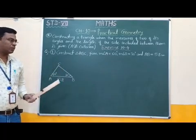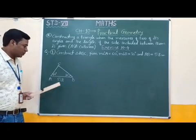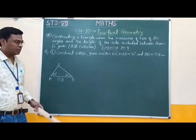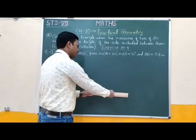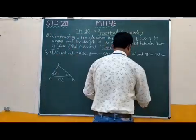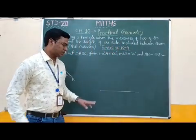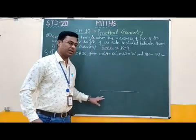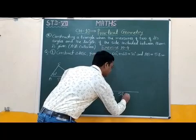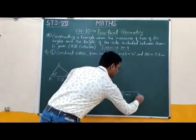Now we are going to draw the actual construction. First of all, we have to draw the AB line segment. Therefore we have to take 5.8 cm distance here. This line segment is 5.8 cm, and here A vertex and B vertex are marked.